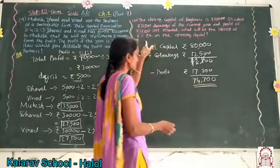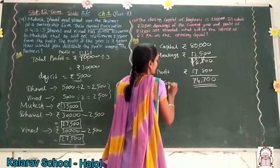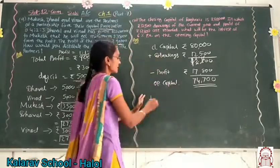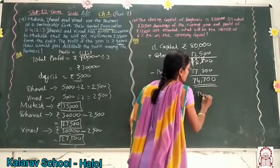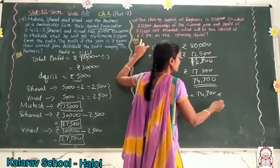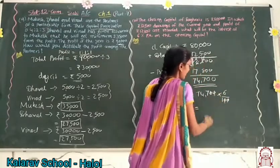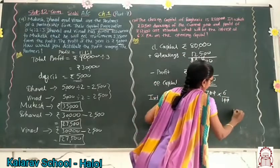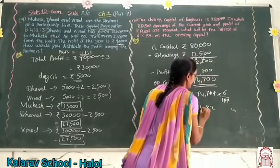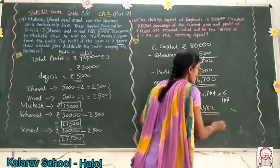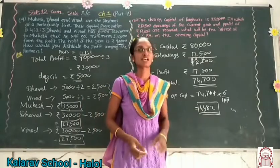From this opening capital of Rs. 74,700 we have to calculate the 6% interest. Interest on opening capital = 74,700 multiplied by 6%, which gives us Rs. 4,482. So the amount of interest is Rs. 4,482. Up till this we have to continue in the next session.